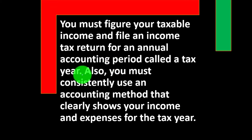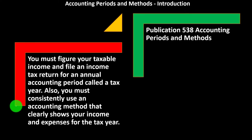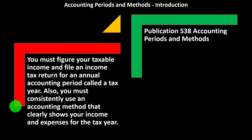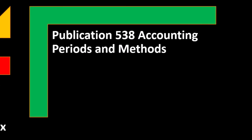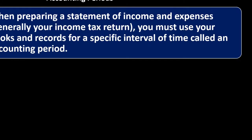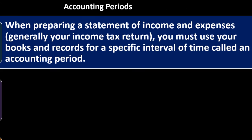An annual accounting period is 12 months. Usually it's going to be the calendar year for a Schedule C business. You must consistently use an accounting method that clearly shows your income and expenses for the year — consistency is a key word. Publication 538, Accounting Periods and Methods, has more information. When preparing income and expenses, you must use your books and records for a specific interval of time called an accounting period.